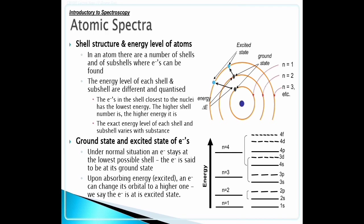Shell structure and energy level of atoms. In an atom, there are a number of shells and subshells where electrons can be found.